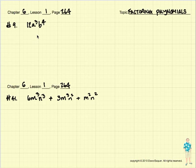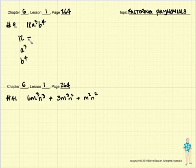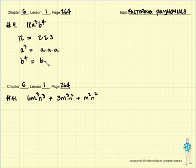Let's try number 9 first. It says 12a cubed b to the 4th, and we're going to find three factorizations for each of these monomials. So let's start with the 12, the a cubed, and the b to the 4th. So 12 we can make as 2 times 2 times 3. a cubed is just a times a times a. And b to the 4th is b times b times b times b.